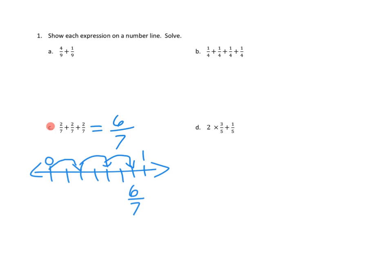There we go. I think I've been able to solve that expression and to show it on a number line. 2/7 + 2/7 + 2/7 = 6/7. Whether we do that as adding like units, or whether we do that on our number line. Let's take a look at another problem.